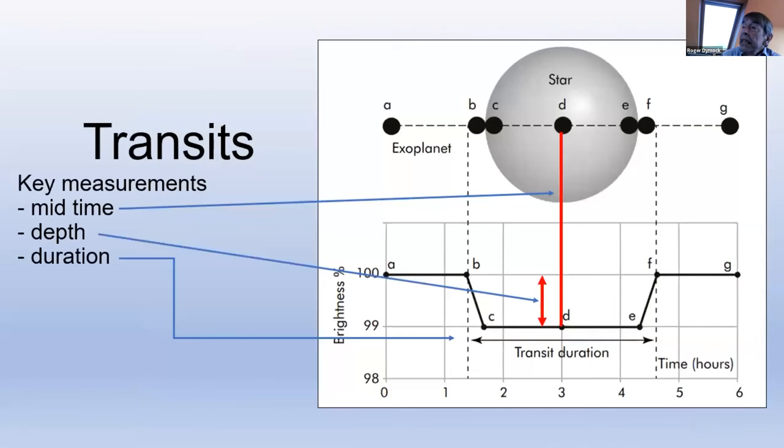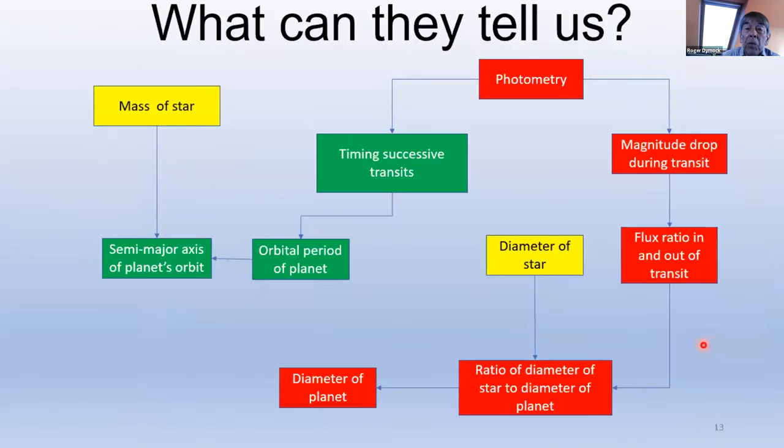These are some of the key terms used. We have mid-time, we have depth and we have duration. So what can they tell us? Determining the period between successive transits will define the orbital period of the exoplanet. That's the green path. Knowing the mass and diameter of the host star gives us the planet's semi-major axis. The magnitude drop in and out of transit from which the related flux ratio can be calculated, combined with knowledge of the host star's diameter, will enable the planet's diameter to be calculated. That's the yellow and red path. So you can learn quite a lot from a transit.